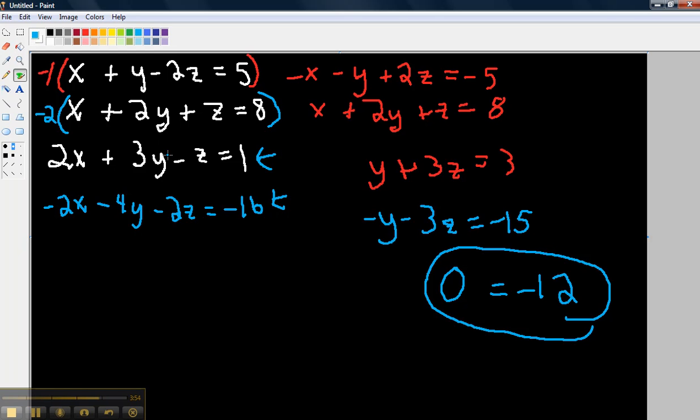That simply means these planes are either parallel or another situation. Later, if we would do a different problem and we come up with one variable here like y equals some number, then I would take that particular solution, plug it back in, and try to solve for the other variables. And that's all we do. So the solution is no solution.